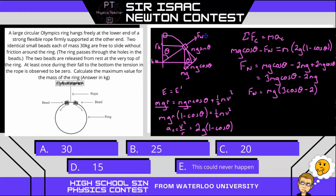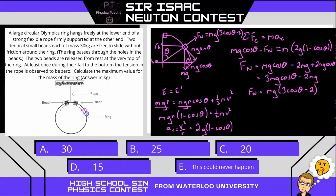Notice that if cos theta equals two-thirds, the normal force would go to zero. And if the normal force goes to zero at some point, past that point the ring will be pulling in on the bead, and therefore the bead will pull out on the ring. So I'm going to draw a free body diagram of the ring at this point where we have some normal force caused by the bead pulling outwards on the ring.